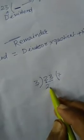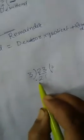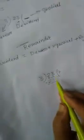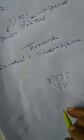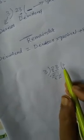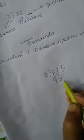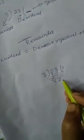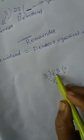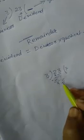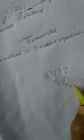7 threes are 21. We give a minus sign here because we are going to subtract. Now 2 is the remainder. There is no more digit after the two digits of the dividend, so naturally 2 is the remainder here.